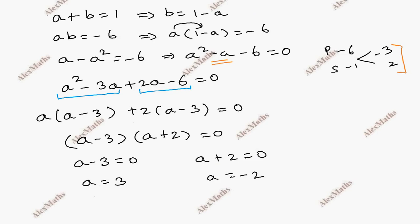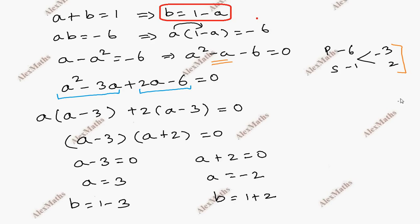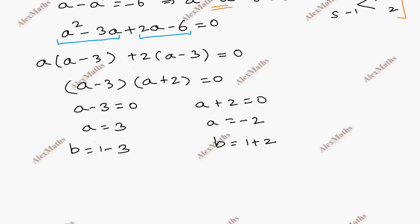Since a and b have the relation b equal to 1 minus a, using corresponding values: when a equals 3, b equals 1 minus 3, so b equals minus 2. When a equals minus 2, b equals 1 minus (minus 2), so b equals 3.